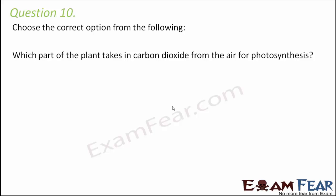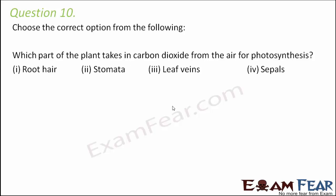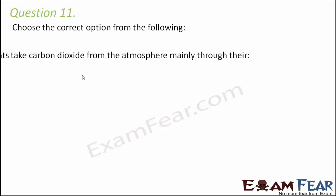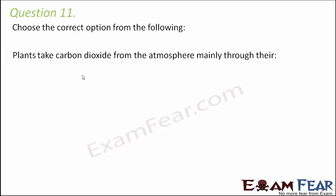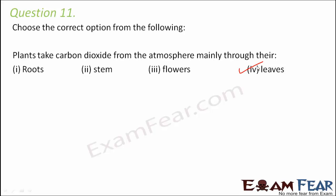Question number ten: Choose the correct option. Which part of the plant takes in carbon dioxide from the air for photosynthesis — root hair, stomata, leaf vents, or sapless? Gaseous exchange is done by stomata, which are tiny pores on the leaves. Plants take carbon dioxide from the atmosphere mainly through their — root, stem, flowers, or leaves? Of course, leaves — because leaves have stomata, and through stomata they take in carbon dioxide.